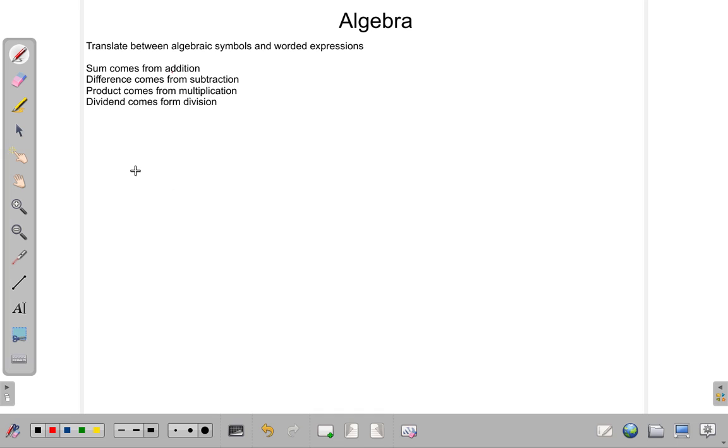Suppose I say, let me type it instead of trying to write it. The sum of x and y. That shouldn't be too difficult. In this case, it is x plus y. That's the sum of x and y.